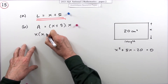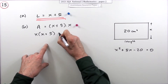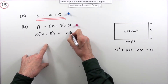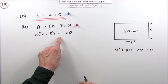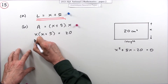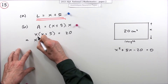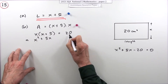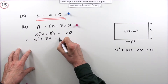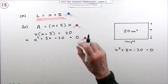Since the area is 20, I can write: x times (x plus five) equals 20. Multiplying that out and gathering terms: x squared plus 5x, bring the 20 across, giving x squared plus 5x minus 20 equals zero. There's the required result.